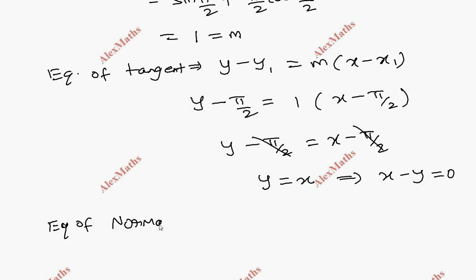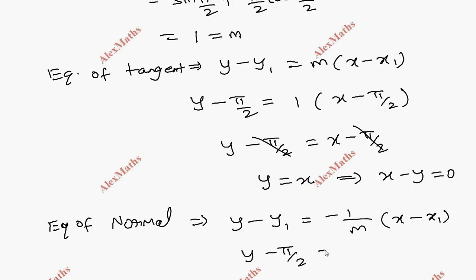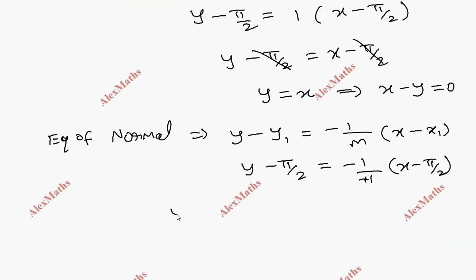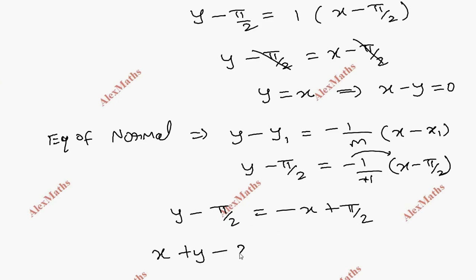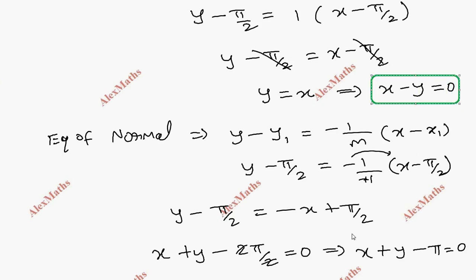Rearranged: x minus y equal to 0. Equation of normal formula: y minus y1 equal to minus 1 by m into x minus x1. So y minus π/2 equal to minus 1 by 1 into x minus π/2. Simplifying: x plus y minus π/2 minus π/2 equal to 0. Total equation: x plus y minus π equal to 0. This is the equation of tangent and the equation of normal for subdivision 3.